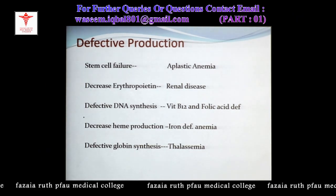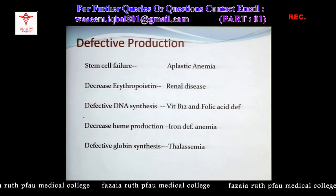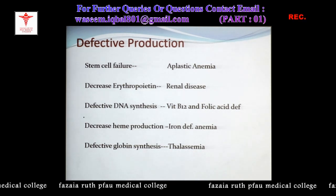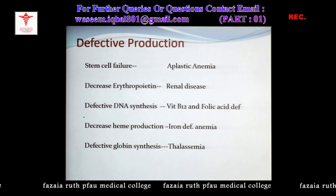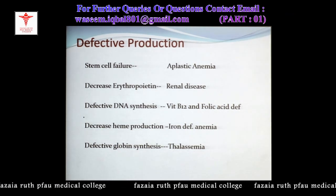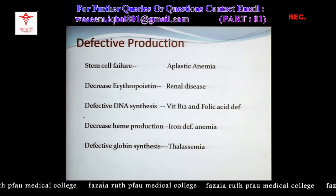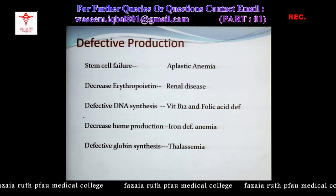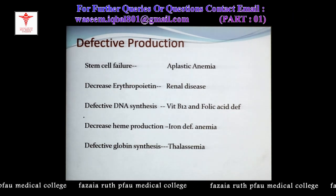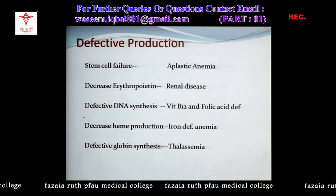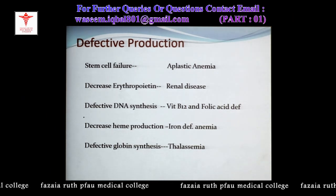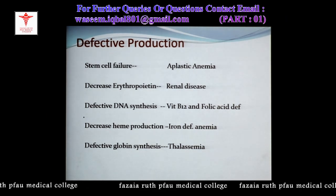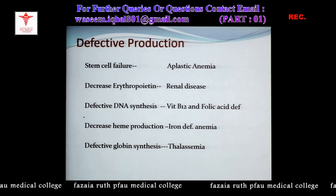Under defective production: aplastic anemia is a stem cell disorder at the bone marrow level — the pluripotent or multipotent stem cell which gives rise to progenitor cells, committed cells, and precursors of RBCs, white cells, and lymphocytes. In chronic renal disease, there is decrease in erythropoietin — mostly sourced from the kidneys — and when kidney function is partially or completely lost, erythropoietin cannot act on bone marrow RBC precursors to produce RBCs. Defective DNA synthesis due to B12 or folic acid deficiency is also a cause.